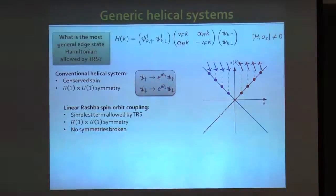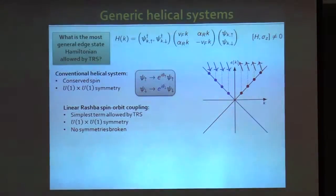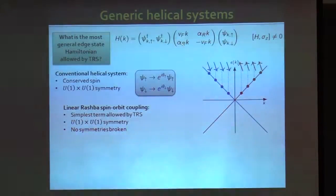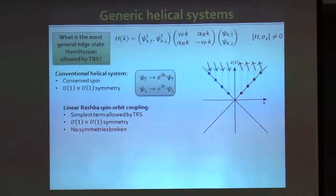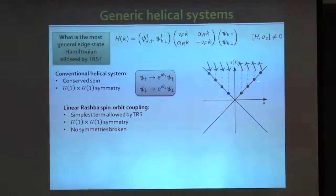To generalize this Hamiltonian, we can add the smallest perturbation allowed by time reversal symmetry — terms linear in k on the off-diagonal. This Hamiltonian no longer commutes with sigma-z, apparently breaking spin symmetry. However, because the spectrum and spin-orbit coupling are both linear, one can simply pick a new spin quantization axis with respect to which the same U(1) × U(1) symmetry is recovered. So this Hamiltonian truly doesn't break any symmetries.